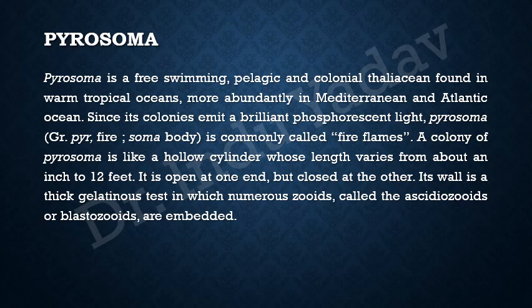A colony of Pyrosoma is like a hollow cylinder, and its length may vary from an inch to 12 feet. It is open at one end but closed at the other — that is, the tube is closed at one end and open at the other.